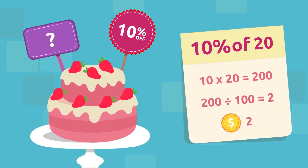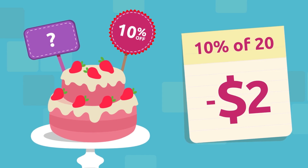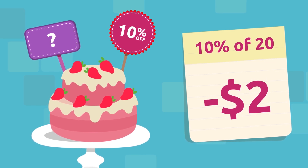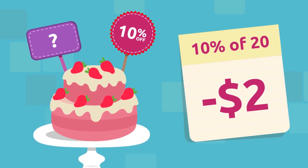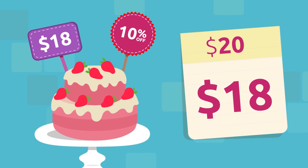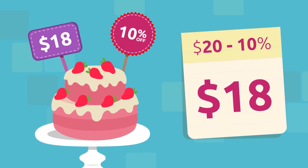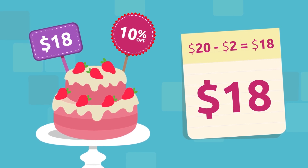If 10% of 20 is 2, each strawberry cake comes with a discount of $2. This means that just for today, the price of this cake will be $18, because we subtracted the 10% discount — that is $2 — from the original price of $20.